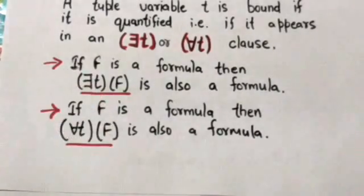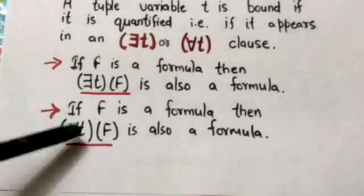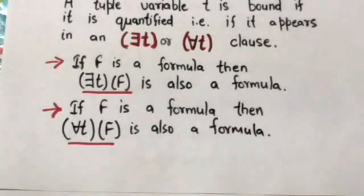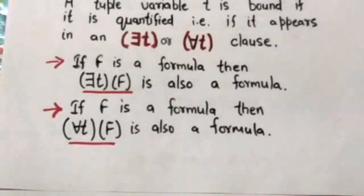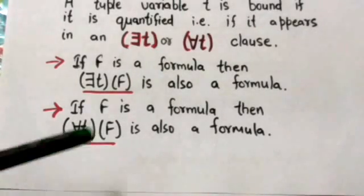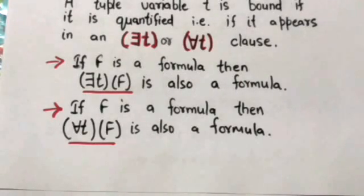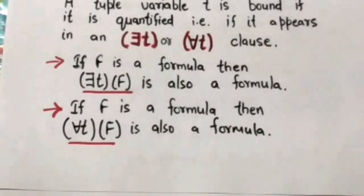If f is a formula, then the expression ∀t(f) is also a formula, where t is a tuple variable. This formula evaluates to true if f evaluates to true for every tuple in the universe assigned to free occurrences of t in f; otherwise it is false.